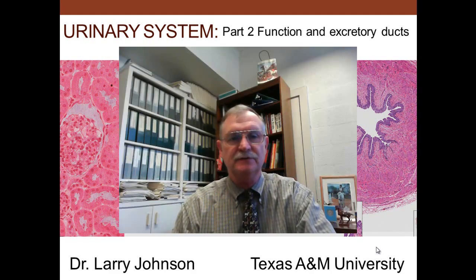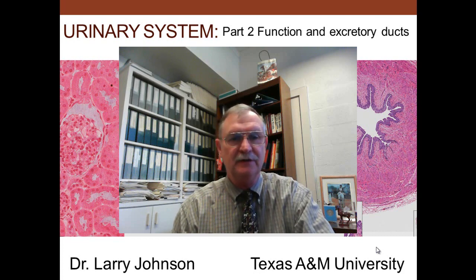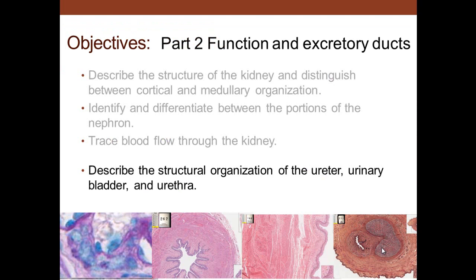Today we'll be talking about the urinary system. The urinary system is divided into two parts. The first part has to do with the kidney and the nephron. The second part has to do with the function of the kidney and the excretory ducts. In part two, we want to describe the structural organization of the urinary bladder and urethra as part of excretory ducts, and talk about the function of the kidney.